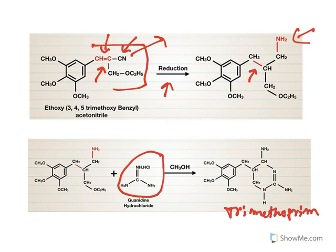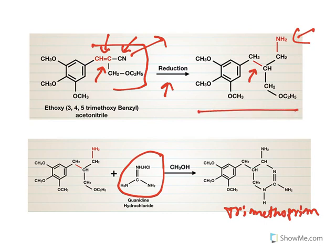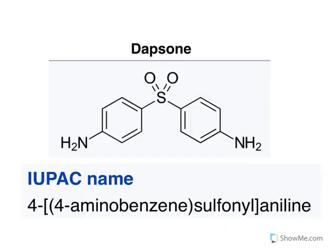To summarize trimethoprim synthesis: start with the 3,4,5-trimethoxybenzaldehyde derivative, combine it with 3-ethoxypropionitrile, reduce to get the amine intermediate, and condense with guanidine to obtain trimethoprim. Take a screenshot to understand the synthesis properly.